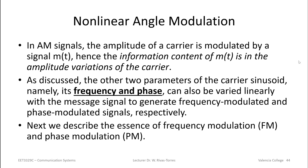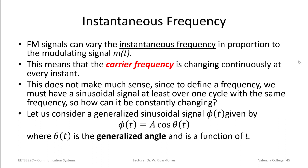From our discussion in the first part of this lecture, we know that in an AM signal, the amplitude of the carrier is what actually carries the information — that's where the information content resides. Now there are two other parameters for the carrier, namely the frequency and the phase, and we can also vary those linearly with respect to the message signal of interest. FM signals can vary the instantaneous frequency in proportion to our modulating signal, the information signal m(t).